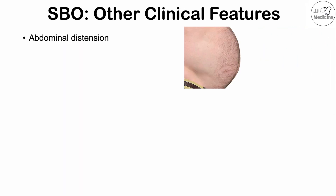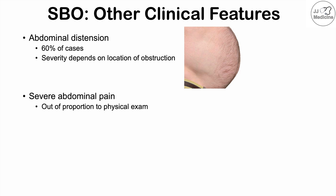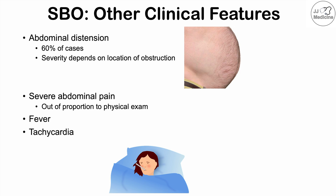Abdominal distension — bloating of the belly — occurs because gases are trapped within the abdomen due to a blockage, and it is more likely when the blockage is in the distal ileum, the last part of the small intestine before the large intestine. This occurs in 60% of cases. Severe abdominal pain out of proportion to physical examination is more likely in strangulated obstruction or bowel perforation. Fever and tachycardia can also occur in the context of bowel perforation or strangulation.